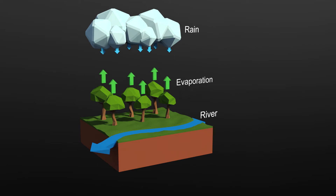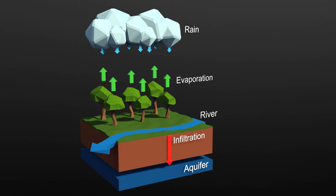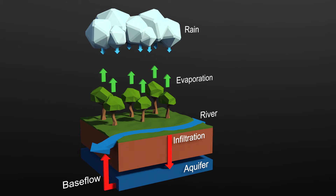The model includes natural evaporation from the ground and plants, and water that is stored in the aquifer. Water enters the aquifer as infiltration through the soil and leaves by evaporation or by joining the river as base flow.